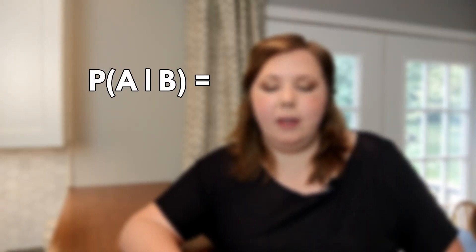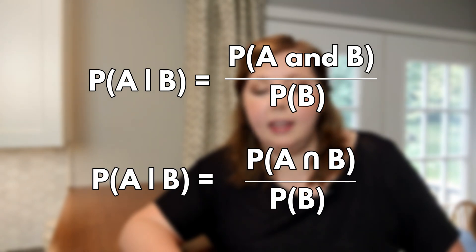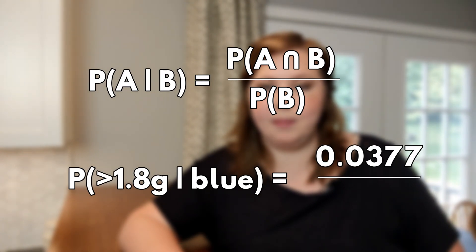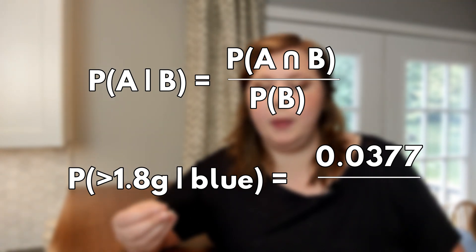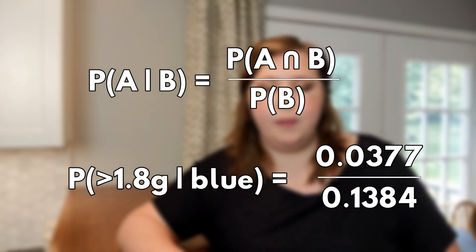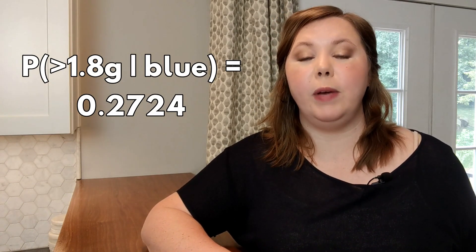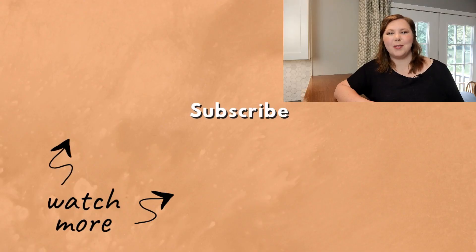The probability of A given B is equal to the probability of A and B divided by the probability of B, or the probability of A intersection B divided by the probability of B. The probability of selecting an M&M that's both blue and over 1.8 grams is 0.0377. The probability of selecting a blue M&M, which is our probability of B, is 0.1384. This means that the probability of an M&M weighing over 1.8 grams when we know that it's blue is 0.2724, or 27 percent. Thanks so much for watching!